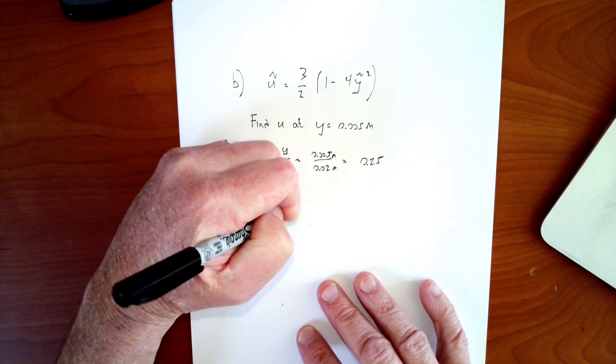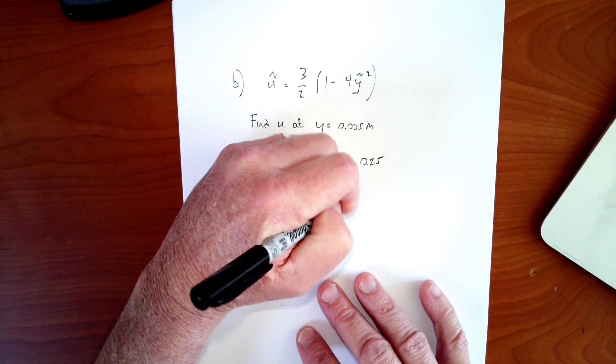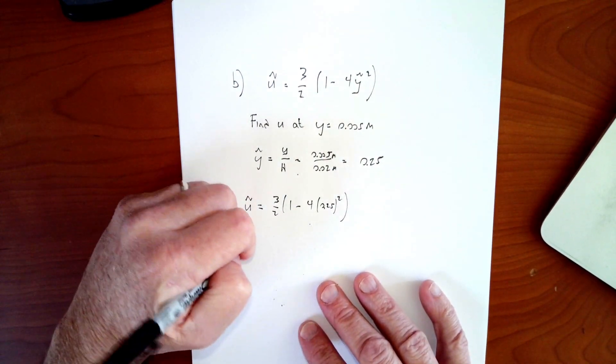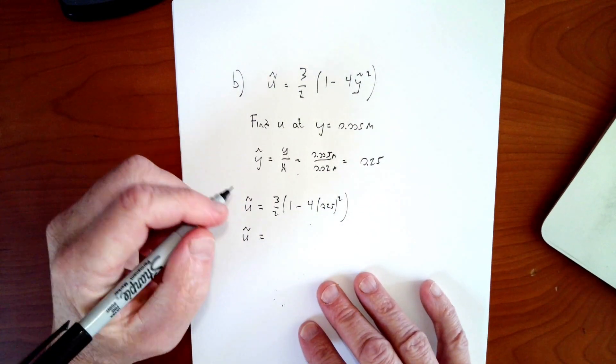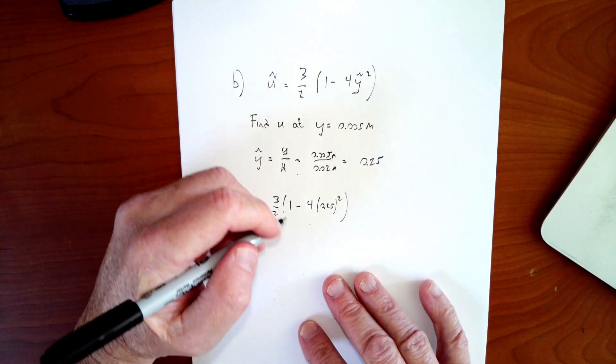So I get 3 halves, 1 minus 4 times 0.25 squared. And that's it. So I plug that into my calculator.